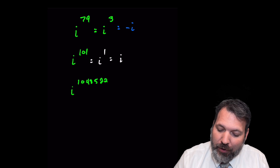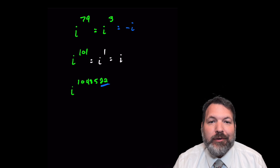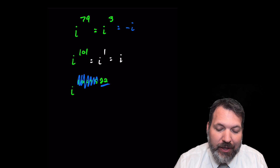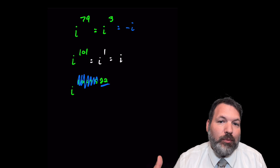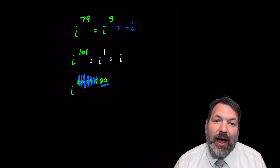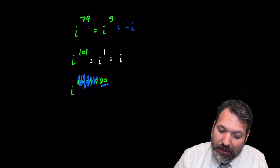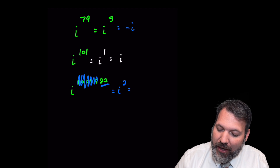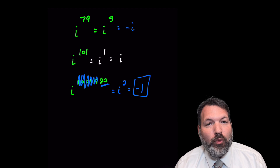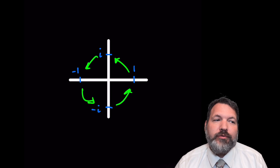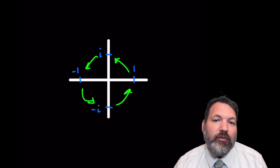Because divisibility by 4 actually only depends on the final two digits of the number, I don't even need to pay attention to the rest of the number. If I have i to some really large number ending in 22, that's the same thing as i to the 22nd, which has a remainder of 2 when we divide by 4, so that's the same thing as i squared equals negative 1. But it all goes back to this cycle which results from our geometric understanding of what precisely complex numbers are.